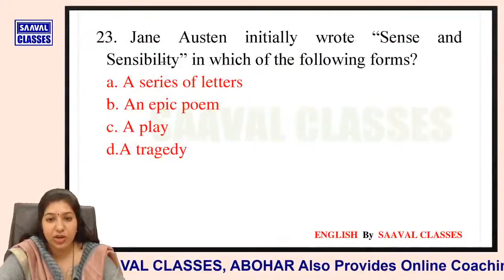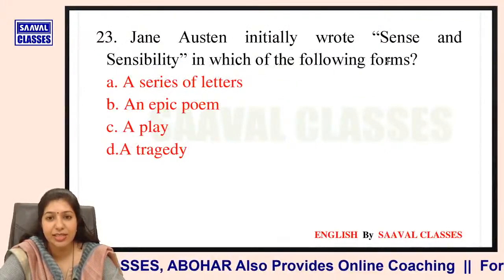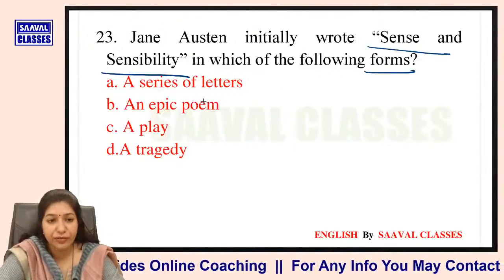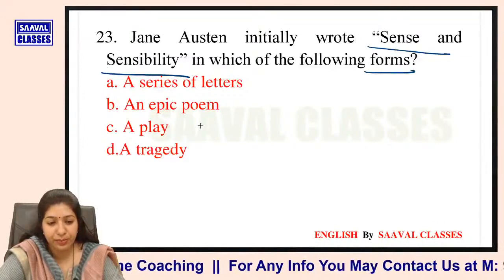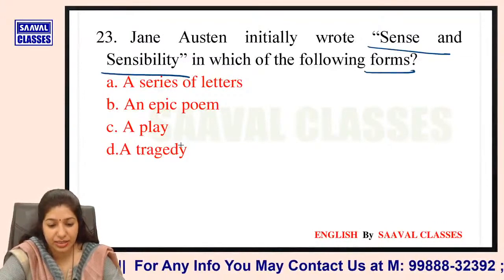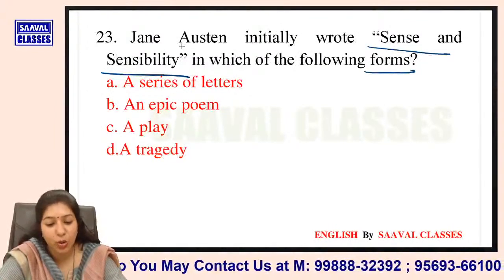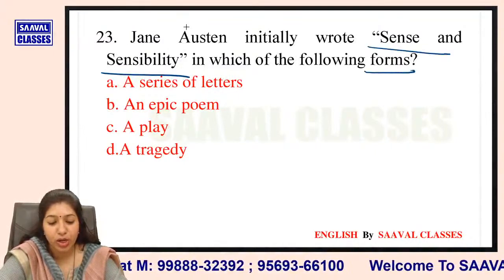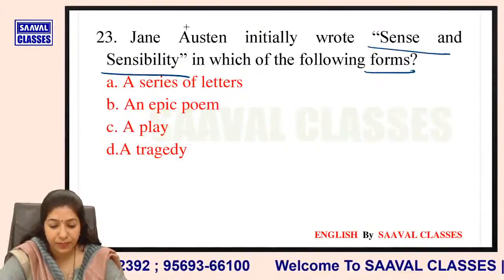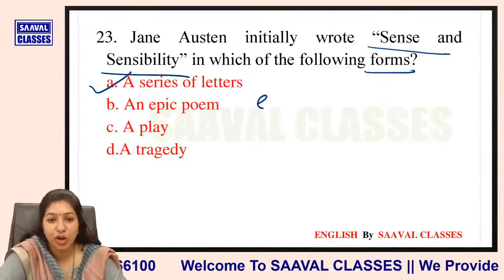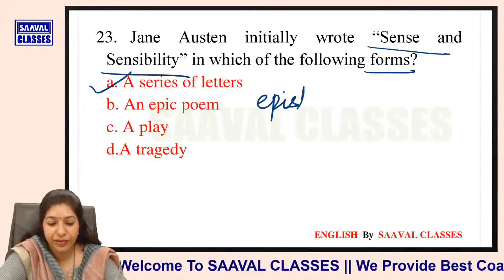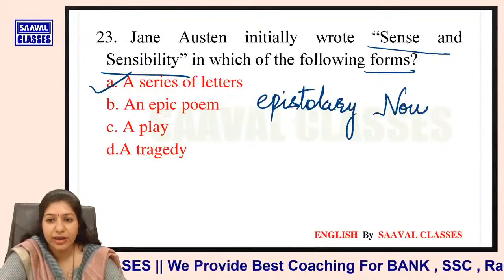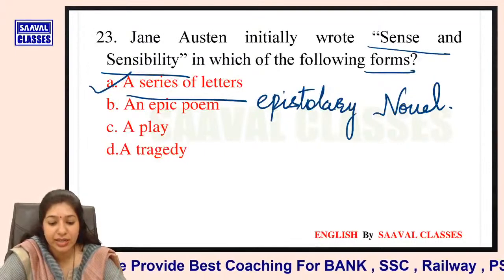Question number 23: Jane Austen initially wrote Sense and Sensibility in which of the following forms — a series of letters, an epic poem, a play, ya a tragedy? It is an epistolary novel — a series of letters. Written in the form of letters.